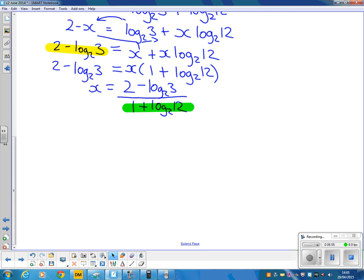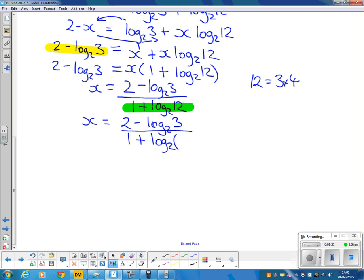So what could we do with this to get log base 2 of 3? Well, 12 is 3 times 4. So 2 minus log base 2 of 3, over 1 plus log base 2 of 4 times 3. We can use our log rules to split that up, because I've got a multiply. That's log base 2 of 4 plus log base 2 of 3. And now I've got my log base 2 of 3, but I've also got a log base 2 of 4.